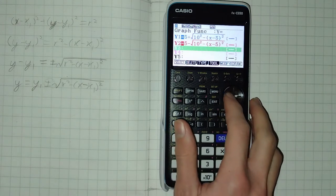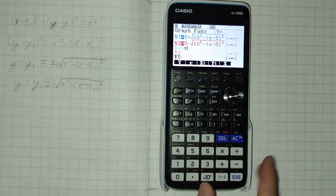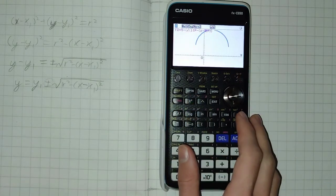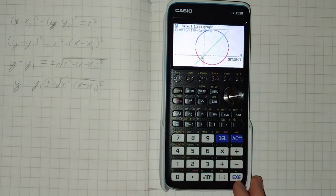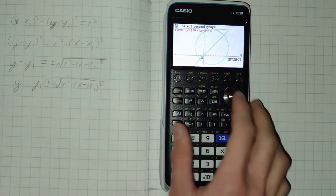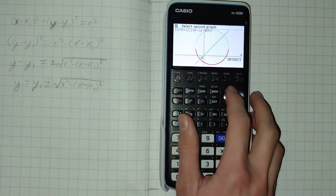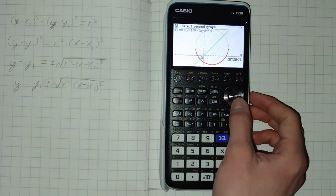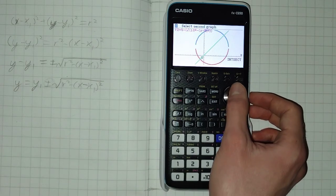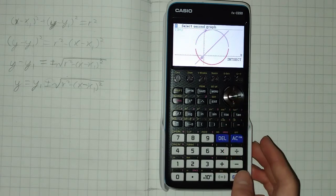We can then add in another line. For example, y equals x. And then we can find the intersects between them by selecting, let's say, the top hemisphere or the top path and find it. And the straight line.